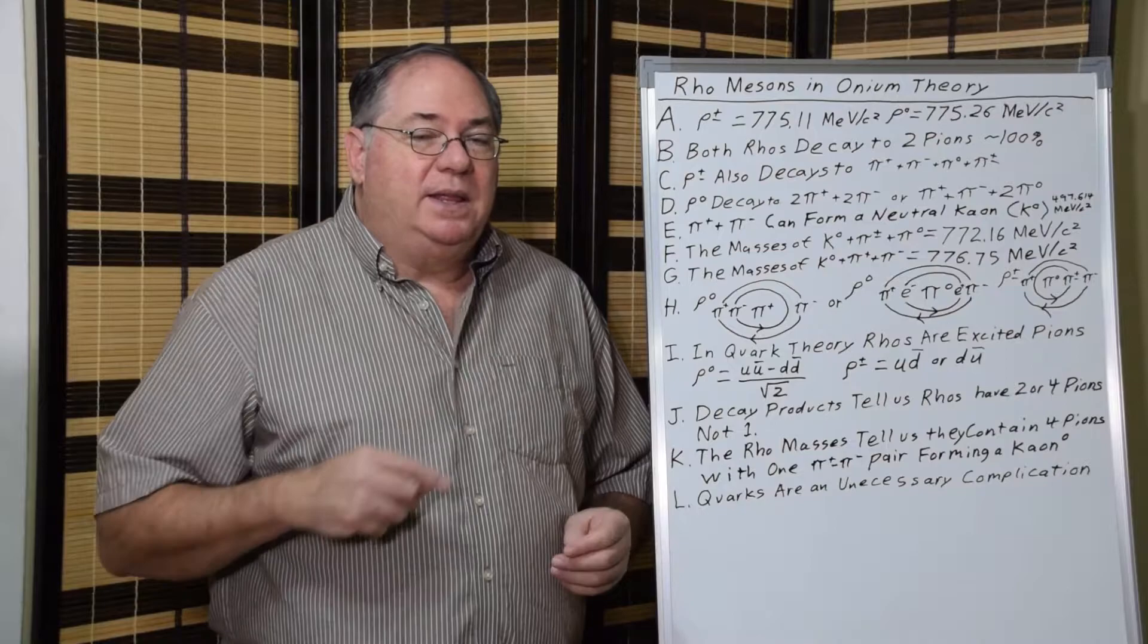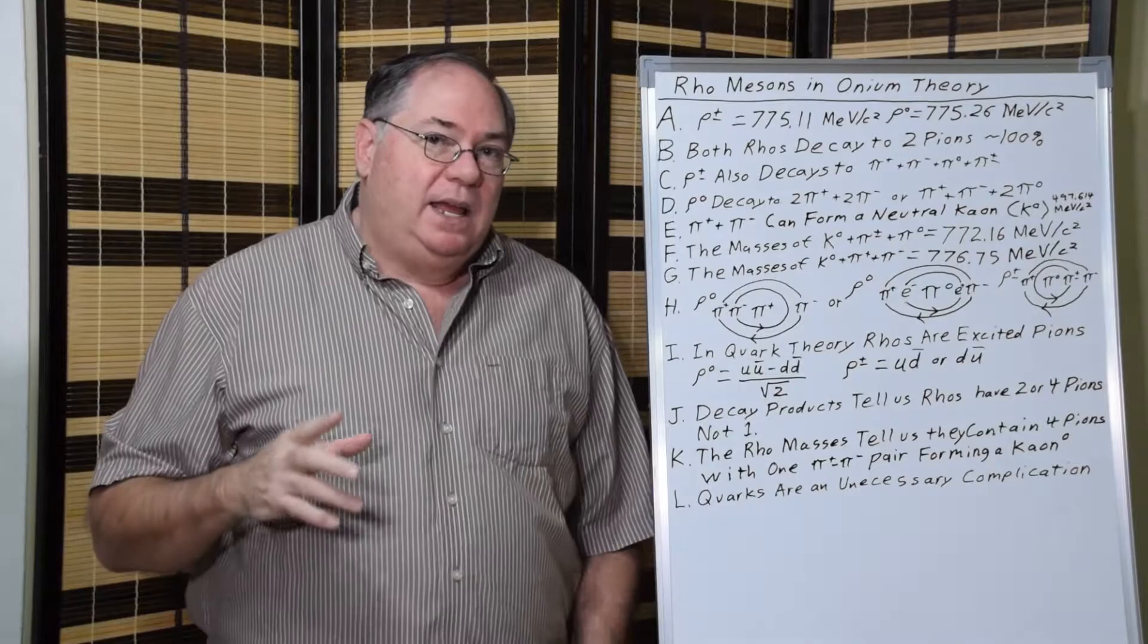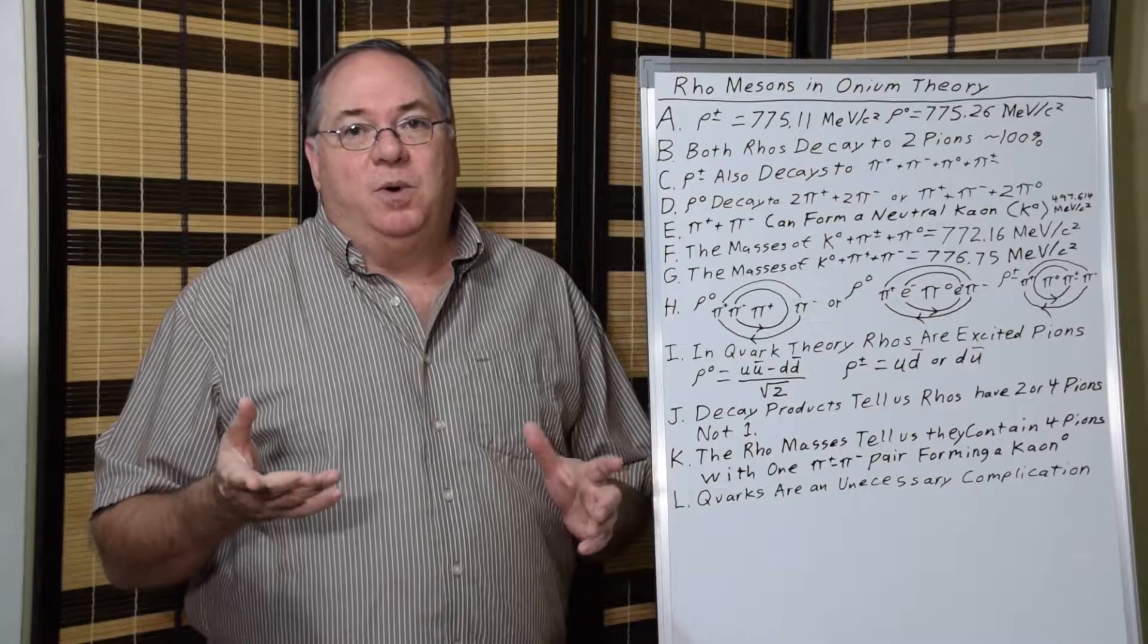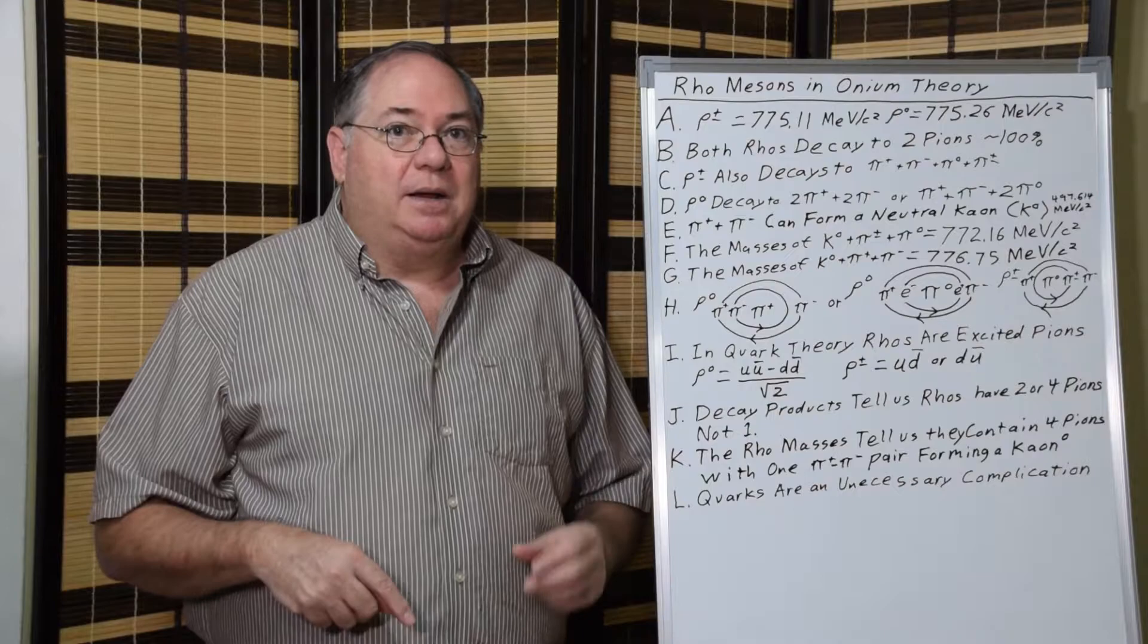These four pion decay modes indicate that the rho really has four pions. We can point out that a positive and negative pion, given a little more than 210 MeV/c² of relativistic energy, forms a kaon—a neutral kaon. That's important for the next step.